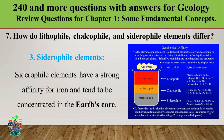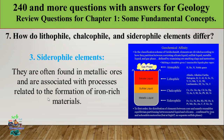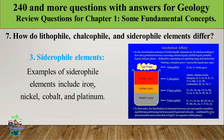Siderophile elements are concentrated in the Earth's core — the metallic liquid layer — whereas lithophile elements are found in the crust and mantle. Siderophile elements are found in metallic materials and are associated with the formation of iron-rich materials. Examples include iron, nickel, cobalt, and platinum. This classification follows Goldschmidt's geochemical affinity principle.